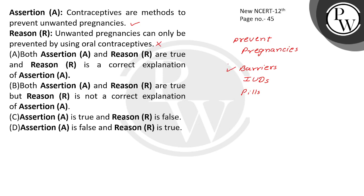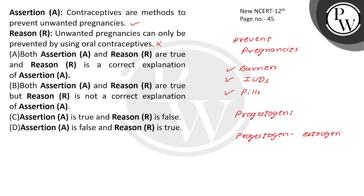Now we can talk about barrier methods — IUDs can also be used, pills can also be used, oral contraceptives via oral administration in small doses. IUDs can also be used, either progesterone or progesterone and estrogen. These pills have to be taken daily for a period of 21 days, starting preferably within the first 5 days of the menstrual cycle.